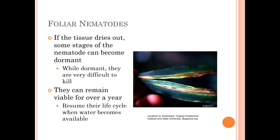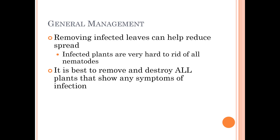Here is a leaf of a daylily that's infected. If the tissue dries out, some stages of the nematode can become dormant, and while dormant they are very difficult to kill. They can remain viable for over a year and will resume their life cycle when water becomes available. For general management, removing infected leaves can help reduce the spread, but once a plant has nematodes it's very hard to get rid of them — it's best to remove and destroy all plants that show any symptoms of infection.